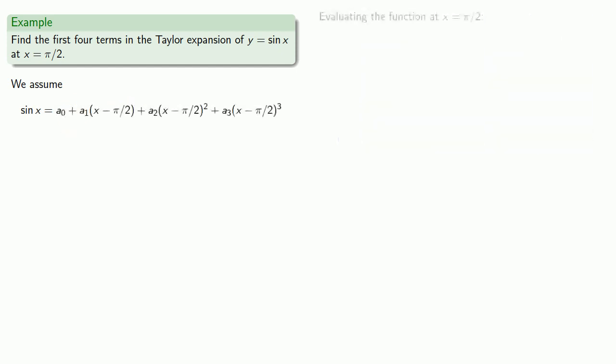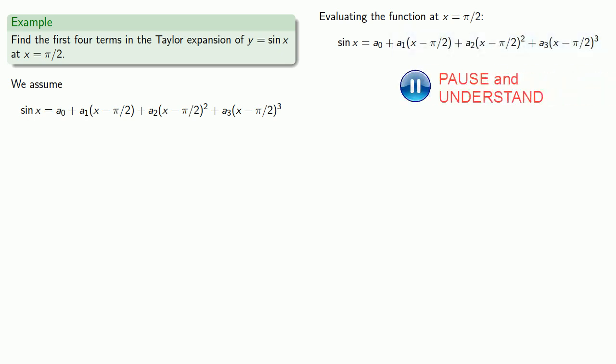We'll evaluate the function at x equals π over 2, where the point of using π over 2 is all of our higher order terms are going to drop out. This gives us an equation we can solve for a₀, which gives us the first term in our expansion.